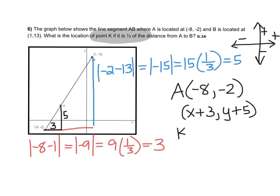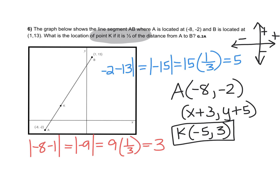For point K, I'm going to add three to negative eight, giving me negative five. Then I add five to negative two, giving me positive three. So K, which is one-third of the distance from A to B, is located at (-5, 3). Looking back at my picture, K is right there at (-5, 3), and I want to verify that number is reasonable — it lands on the line segment, and it does make sense that it would be located about right there on my picture. I hope that was helpful!